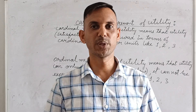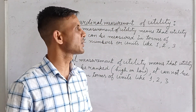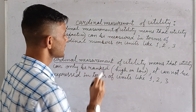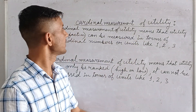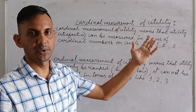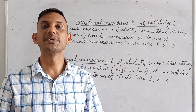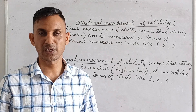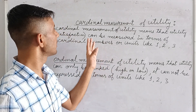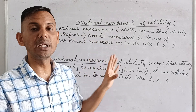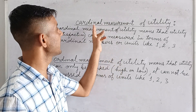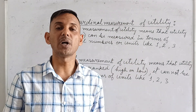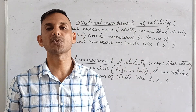Hello students, today we will discuss two very easy topics: cardinal measurement of utility and ordinal measurement of utility. Cardinal measurement of utility means we can measure our satisfaction in terms of numbers.